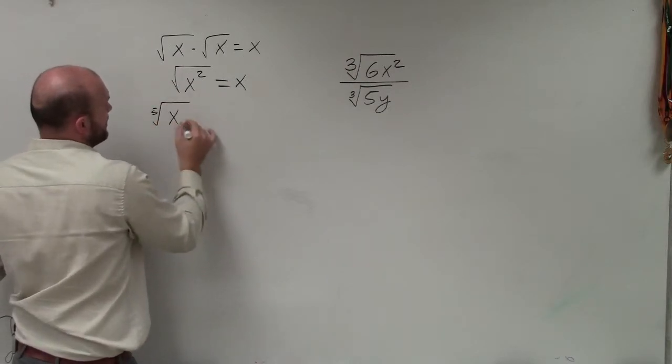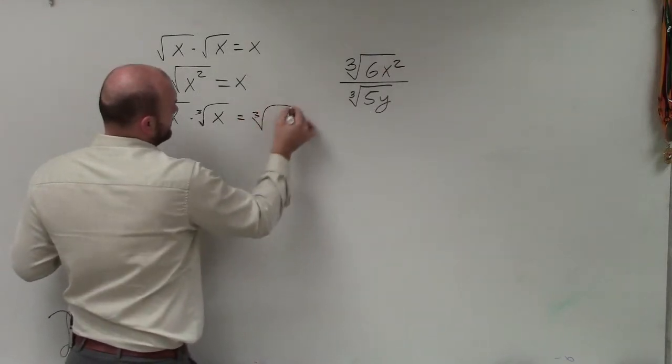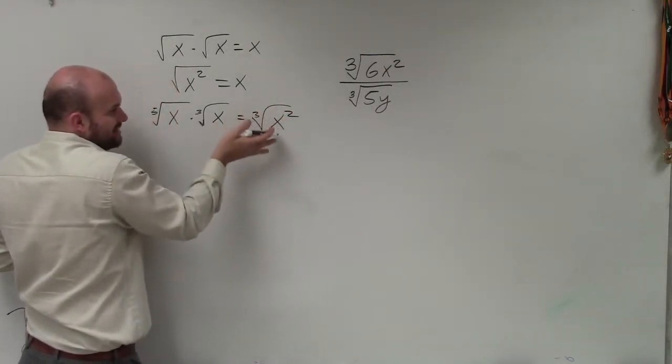However, the cube root of x times the cube root of x equals the cube root of x squared, where we cannot simply take the cube root.